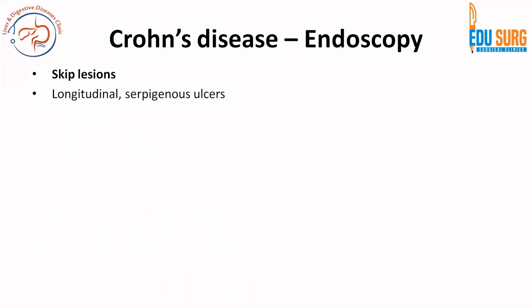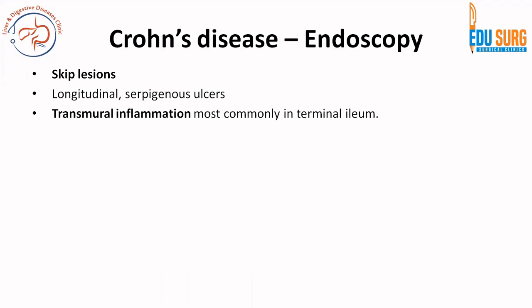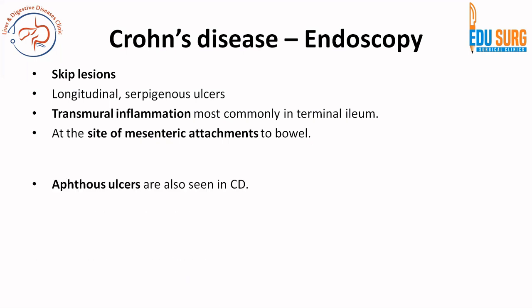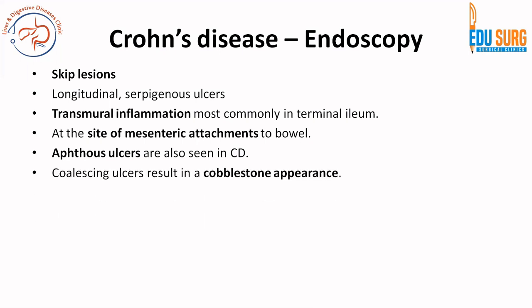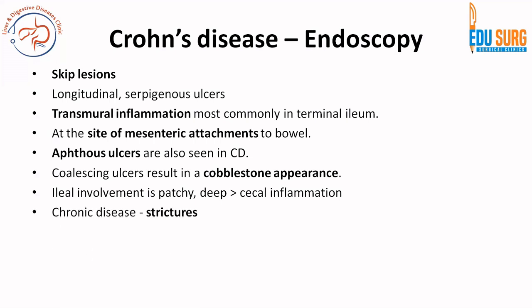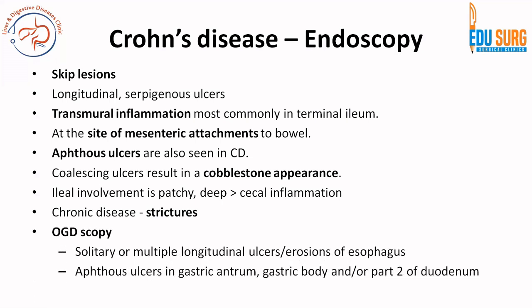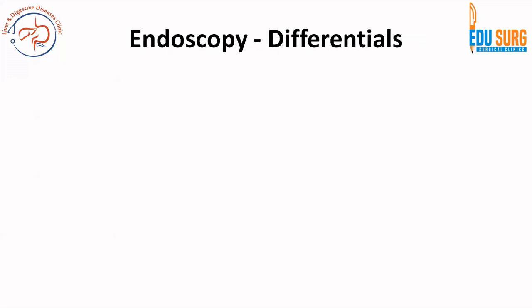Coming to features of Crohn's disease: there are skip lesions, longitudinal serpiginous ulcers, and transmural inflammation most common in the terminal ileum. Inflammation is on the mesenteric side, and aphthous ulcers are seen. Coalescing ulcers result in the classic cobblestone appearance characteristic of Crohn's disease. Involvement is always patchy with skip lesions and is deep. Strictures can occur in Crohn's, in contrast to UC where involvement is mucosal and submucosal. If the upper GI tract is involved, there can be solitary or multiple ulcers or erosions in the esophagus, and aphthous ulcers in the stomach or second part of duodenum.